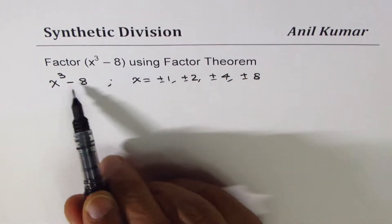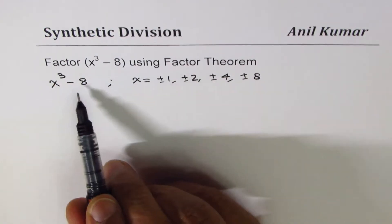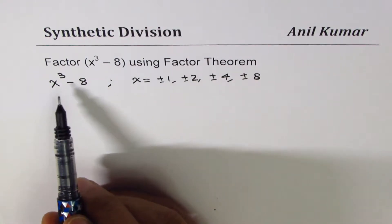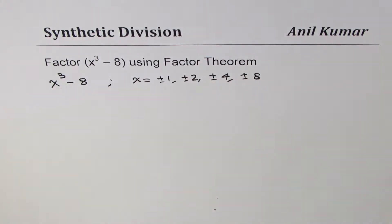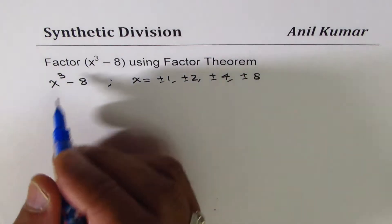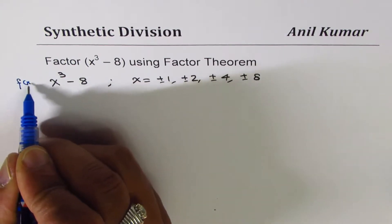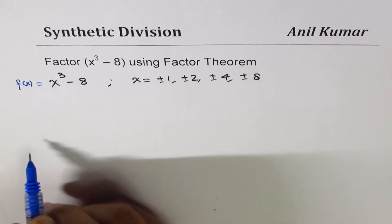So we can substitute one by one these values and then see for which can we have 0, right? So you will find that if I write this value, let's say f of x is given to us as x cube minus 8.